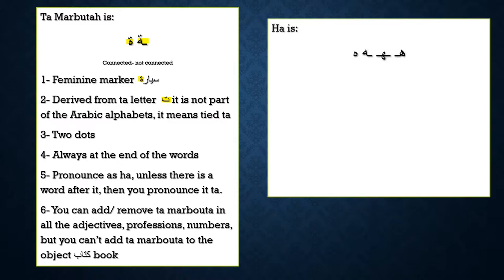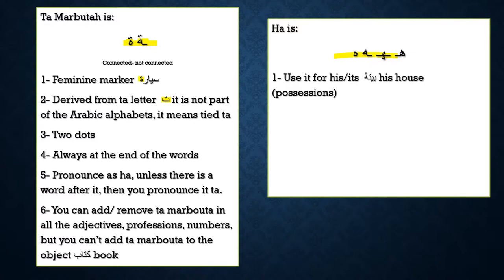Ha has four shapes, because ha is part of the 28 alphabet. Ta marbuta is derived from ta, but ha is part of the 28 alphabet. So ha you can see it in the beginning of the word, you can see it in the middle, you can see it at the end — connected or not connected. We use it for 'his' or 'its.' When I say 'baitohu' — his house — it's ha, it's not ta marbuta. This is one of the ways you can distinguish.